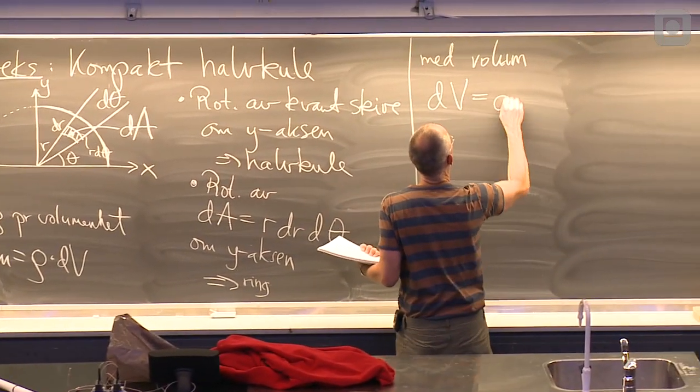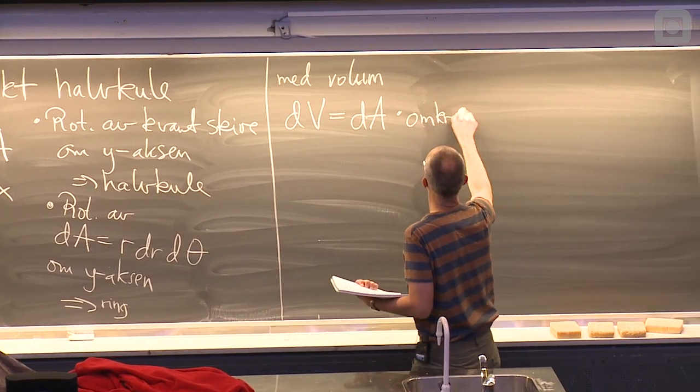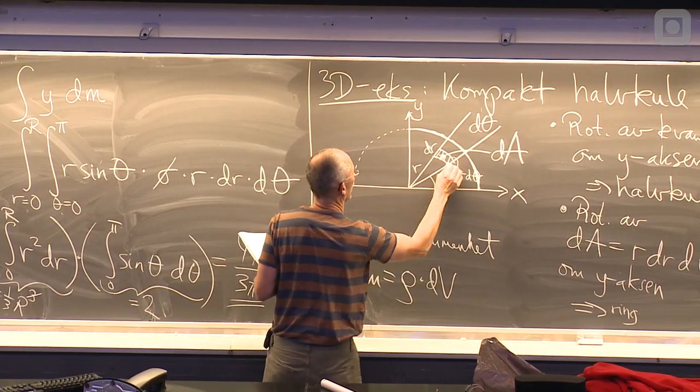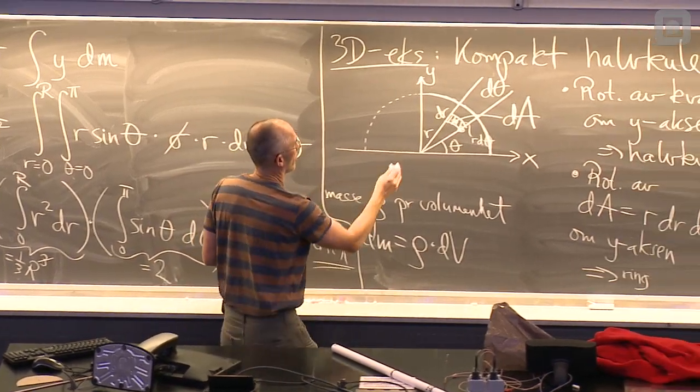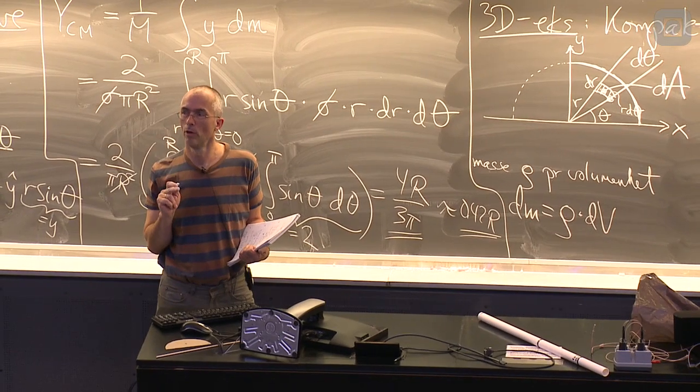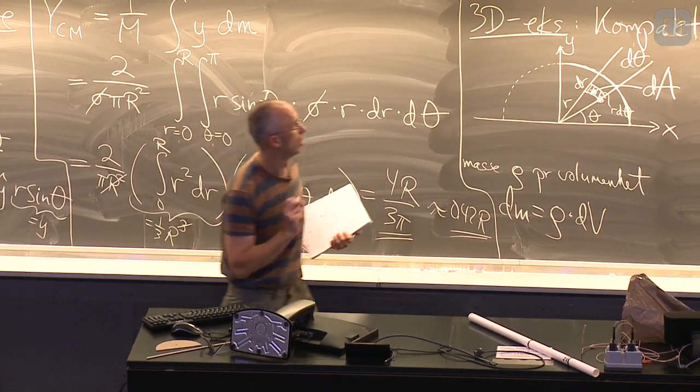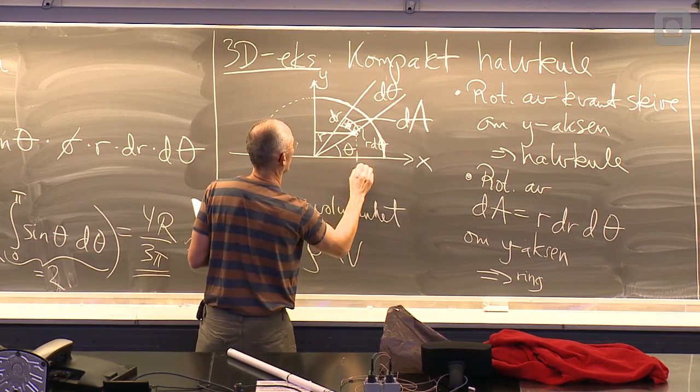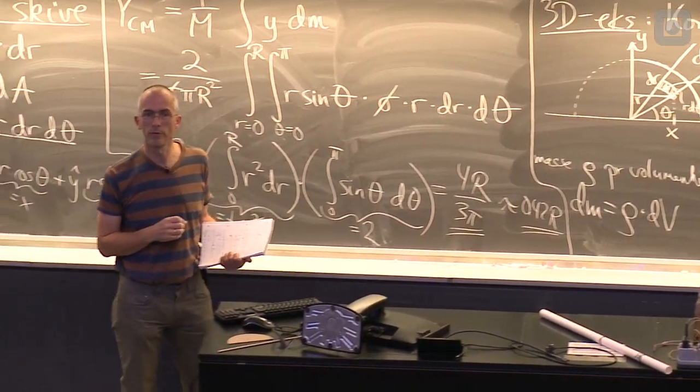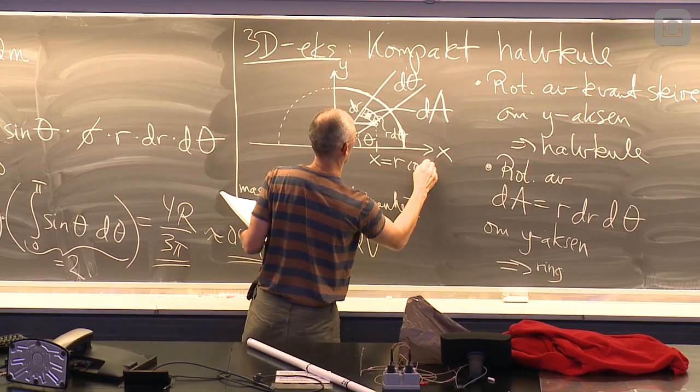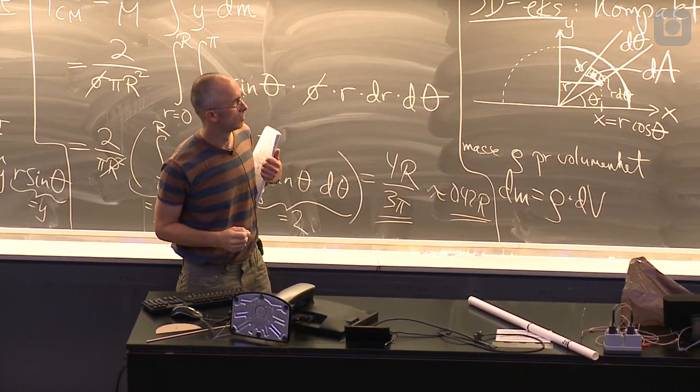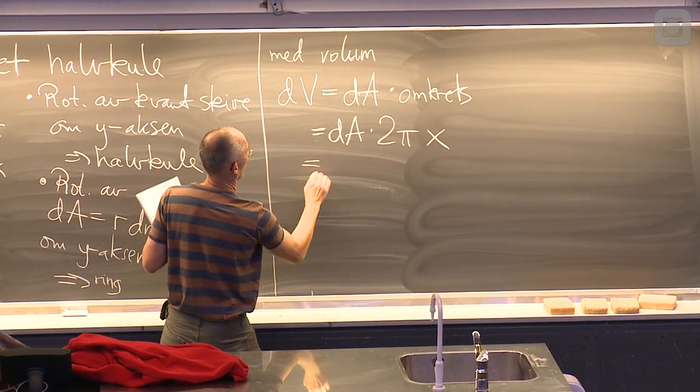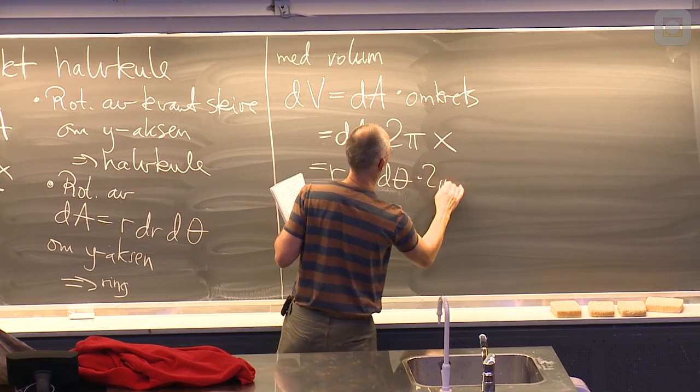Hva blir det i volumet? Det må bli det arealet gange med omkretsen. Hvis jeg tar den, eller ta og se på det punktet der, som faktisk er r og theta. Hvis jeg roterer den omkring y-aksen, så er det en ring med en viss radius. Så lengden, omkretsen, må bli 2pi gange den radien. Den radien, den er der. Det vil si x-koordinaten som tilsvarer det punktet. Og det ser vi fra figuren, er r cosθ, sånn som bortpå der. Så det blir dA gange 2pi x. Eller da r dr d theta gange 2pi gange r cosθ.